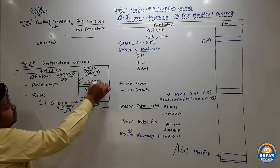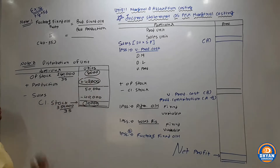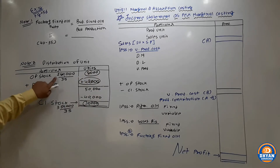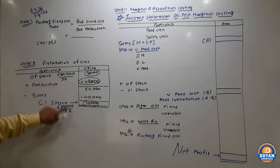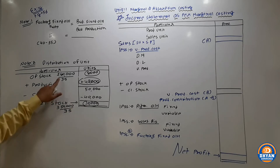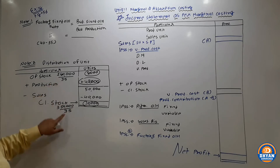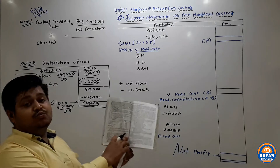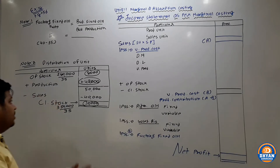Opening and closing stock values are confirmed. Opening stock is 8,000 units and closing stock is 10,000 units, derived by dividing the given values by the marginal production cost of Rs. 35. Production units = 42,000. Under absorption costing, per unit cost is Rs. 40, so we multiply by 42,000 units.